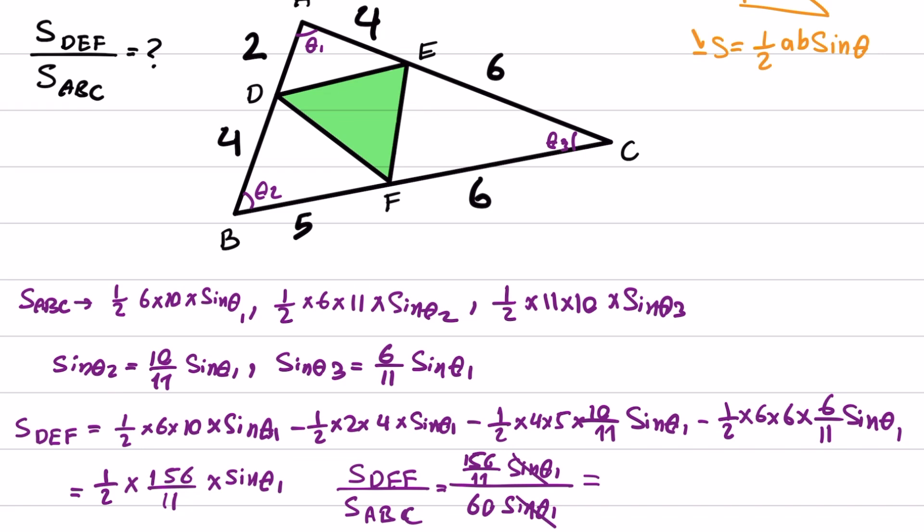We can simplify this, and this will give us 156 over 60 times 11. And if we simplify this, we will have 26/110.